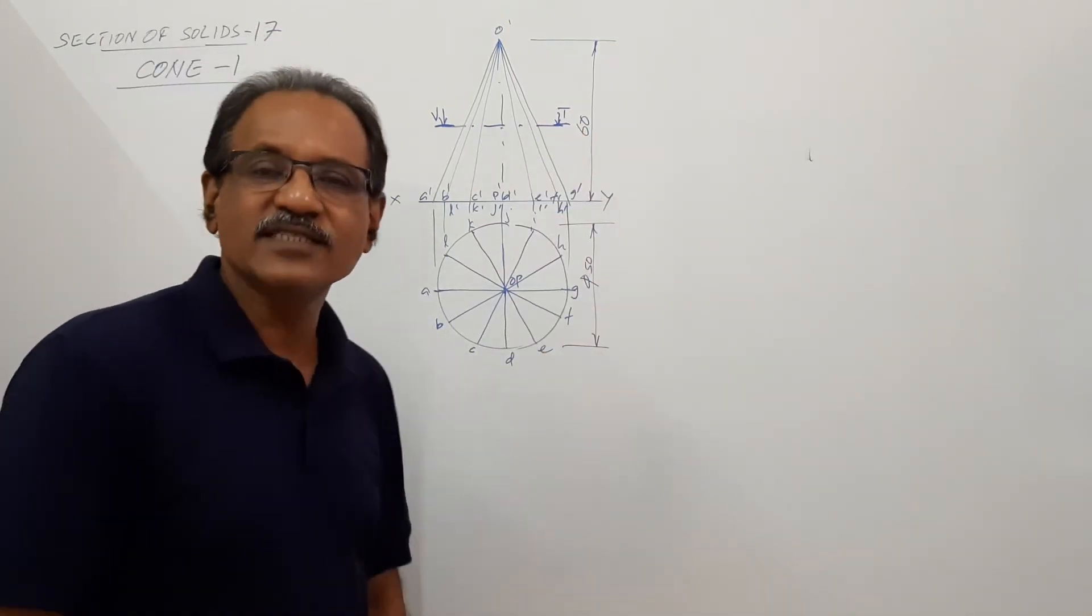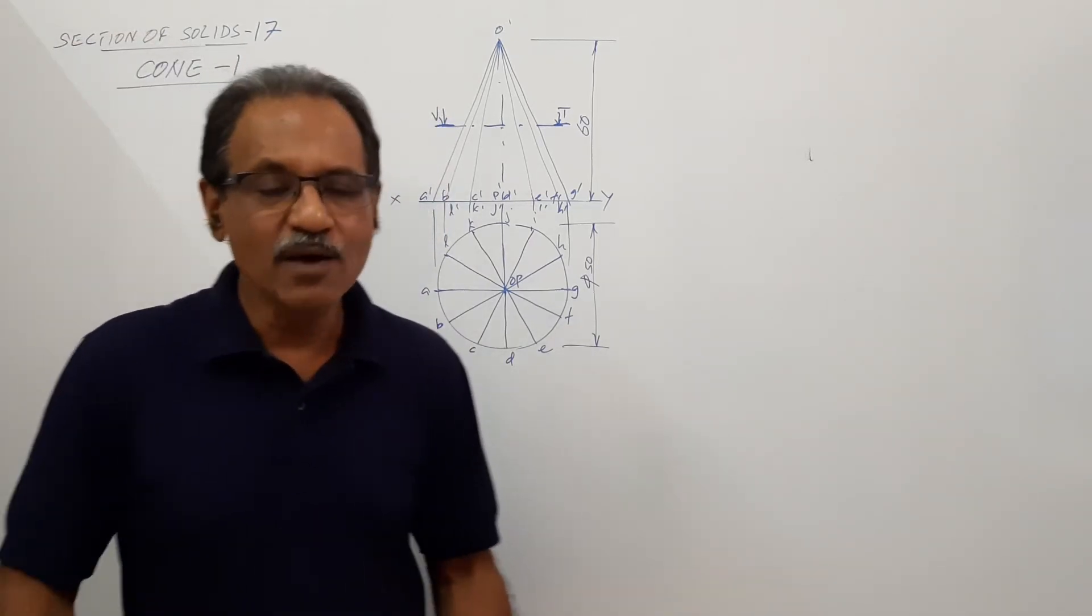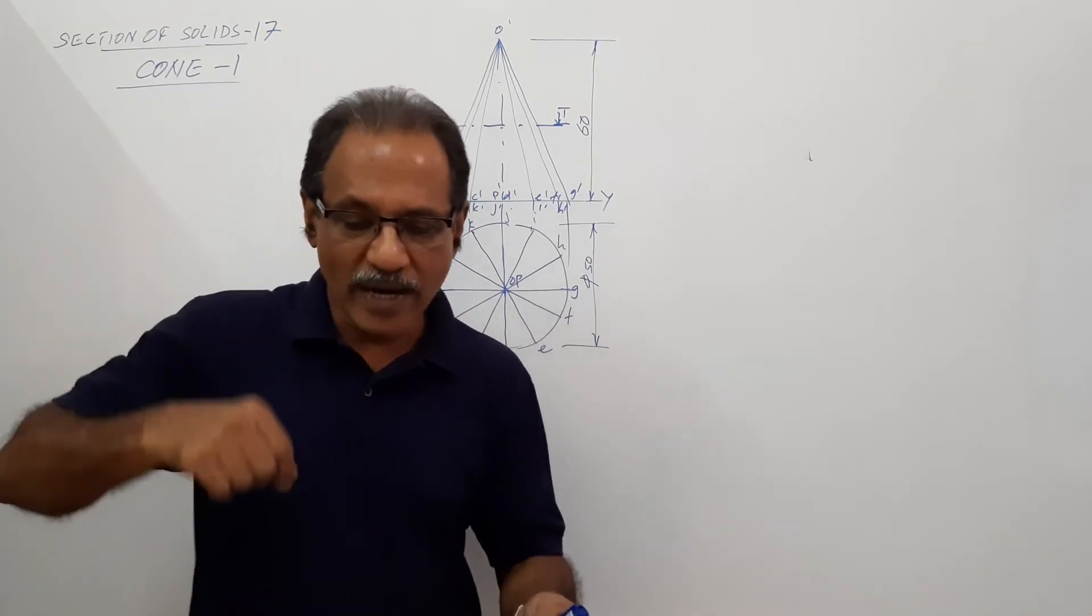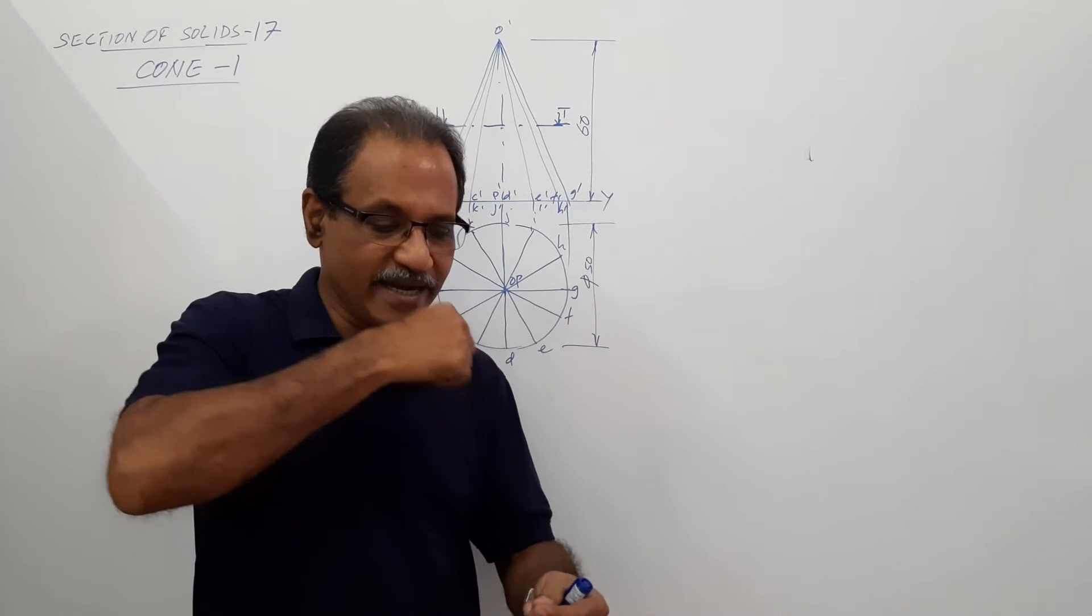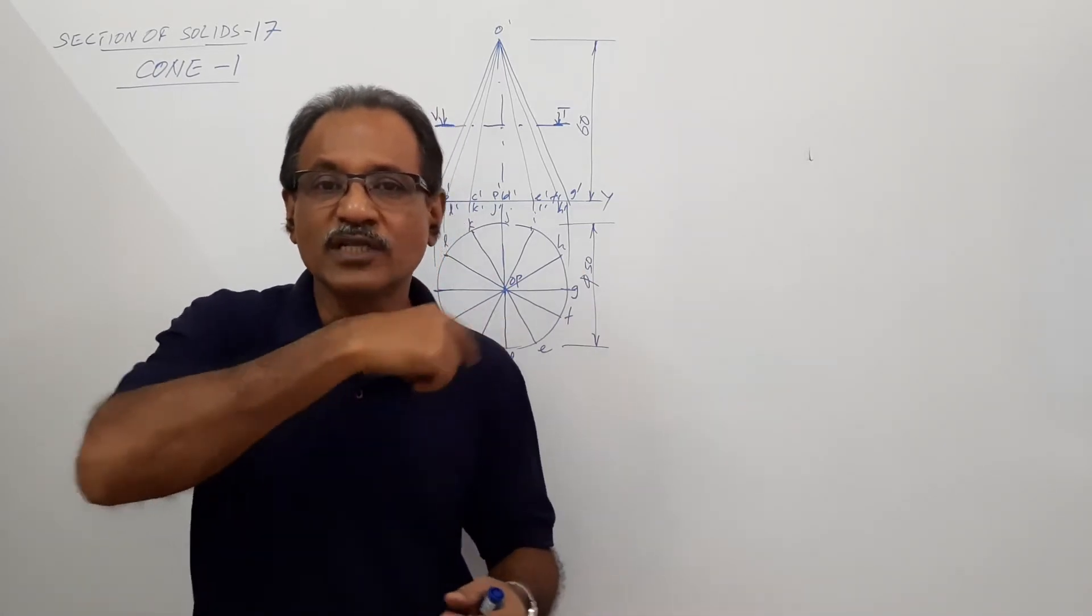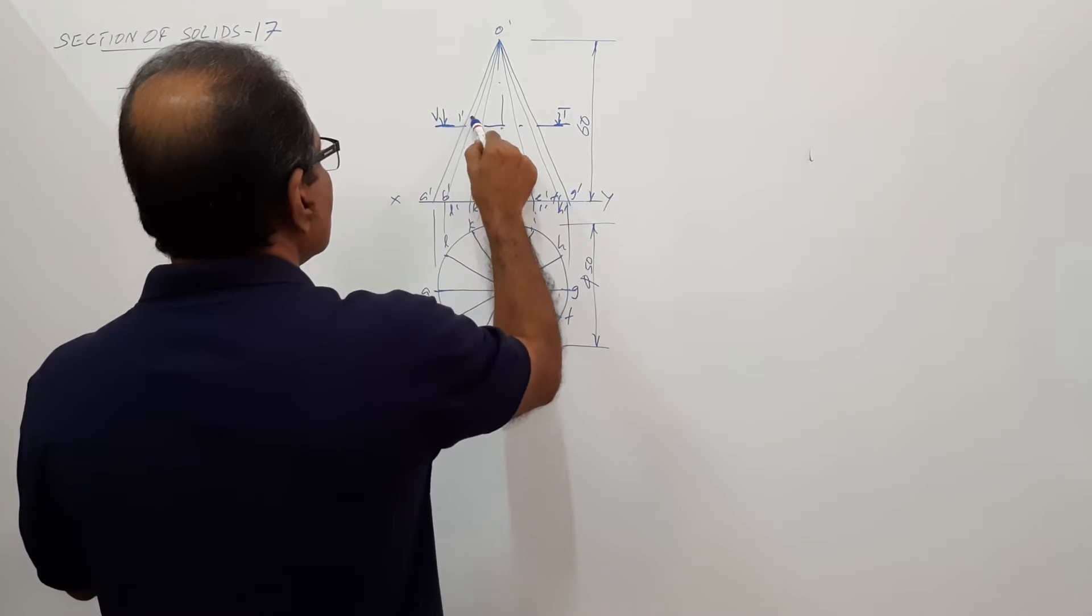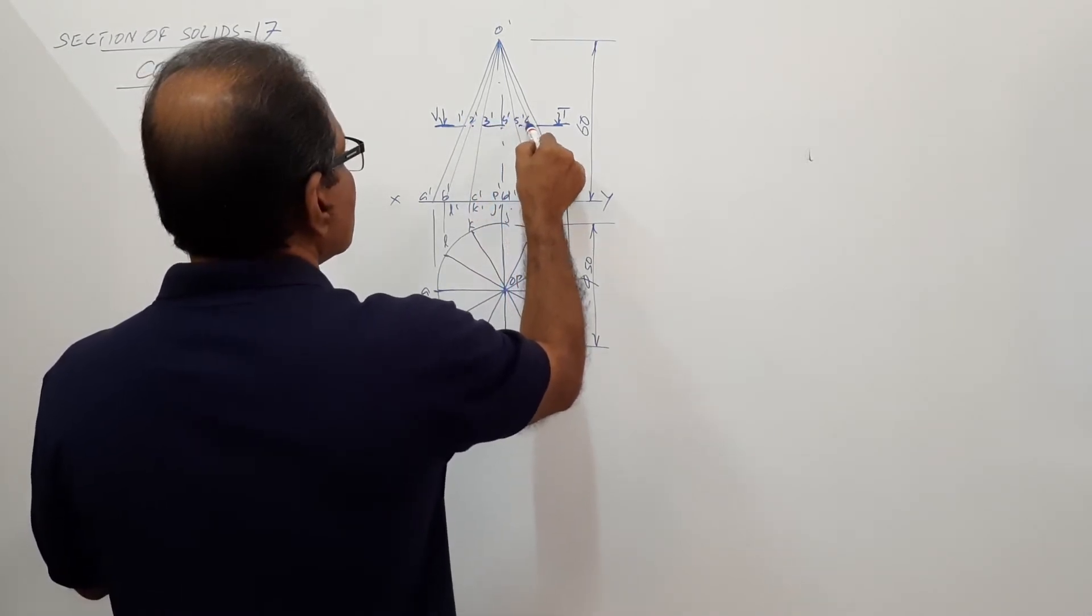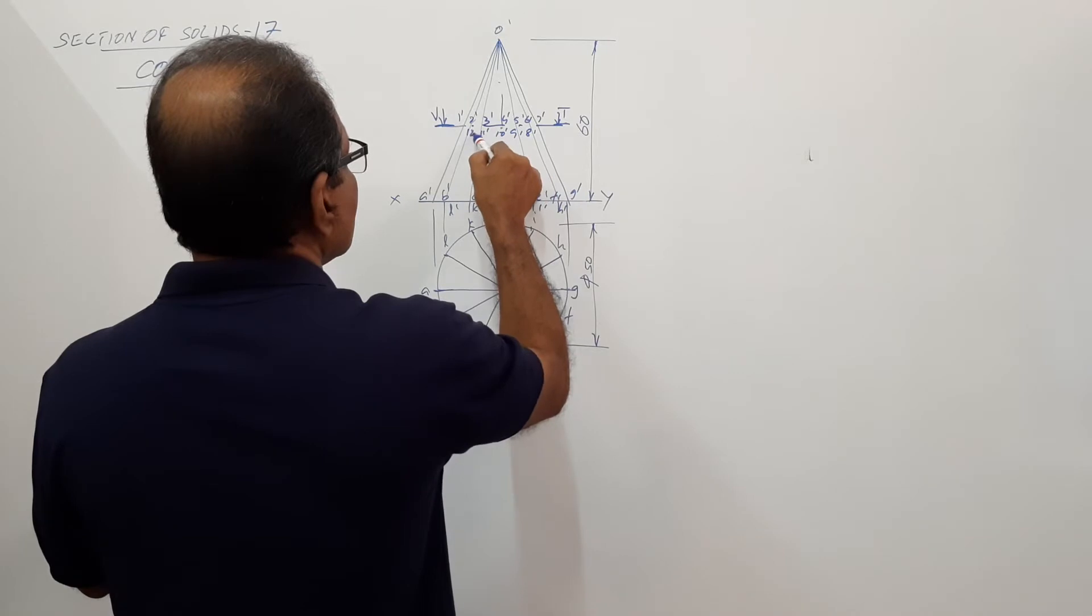How many generators does the cutting plane cut? All the 12 generators. What is the procedure? Mark the points in an order around the body: 1, 2, 3, 4, 5, 6, 7, 8, 9, 10, 11, 12. When you mark, you mark them in the elevation: one dash, two dash, three dash, four dash, five dash, six dash, seven dash, eight dash, nine dash, ten dash, eleven dash, twelve dash.